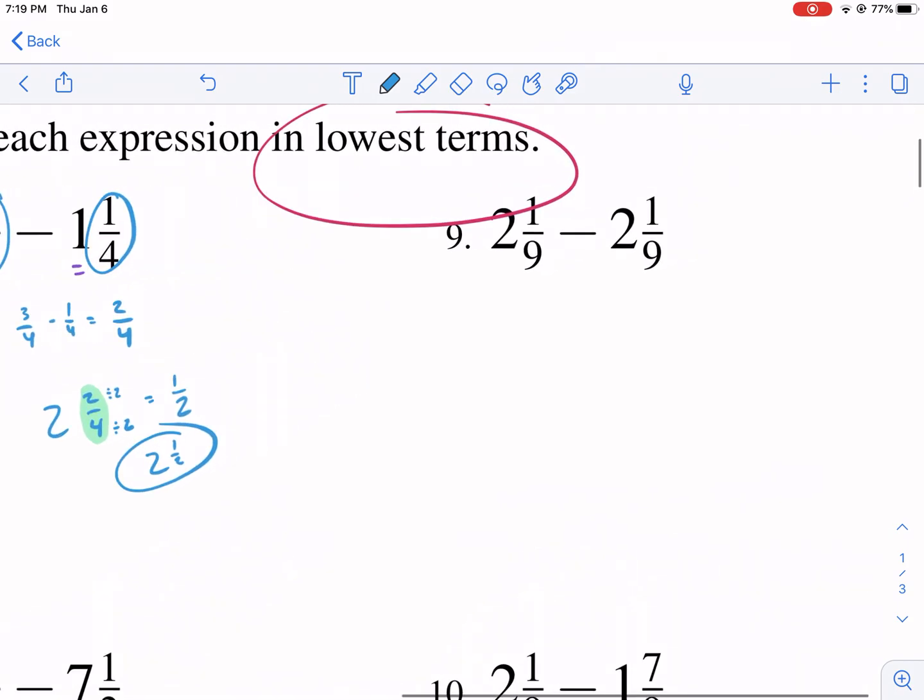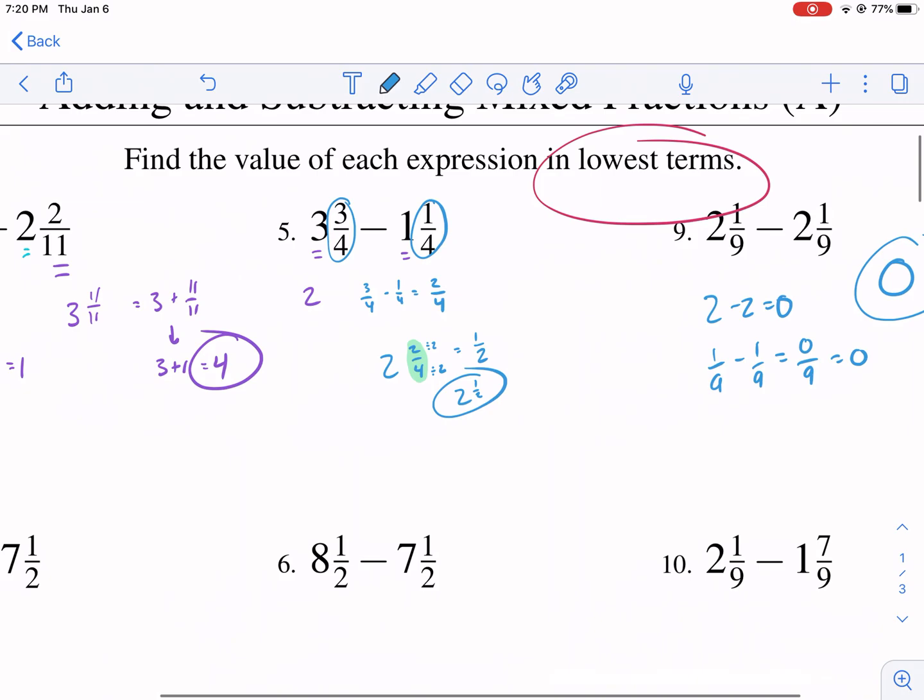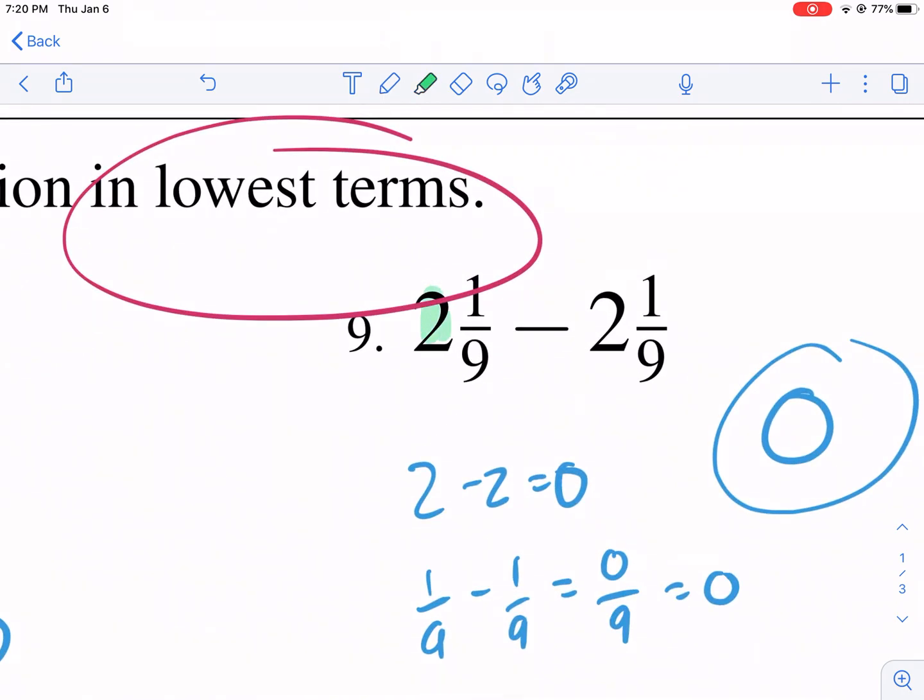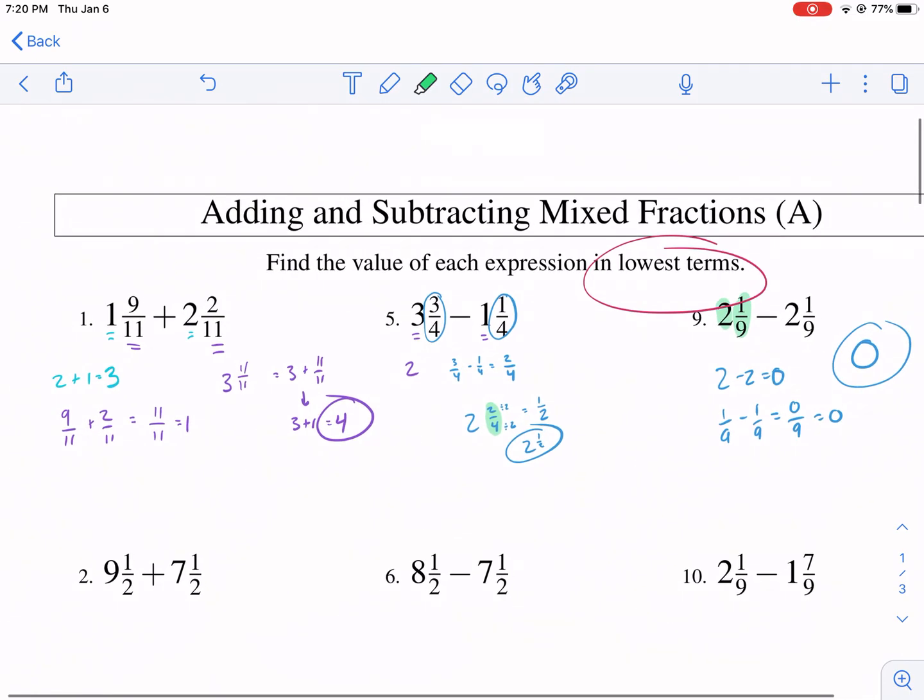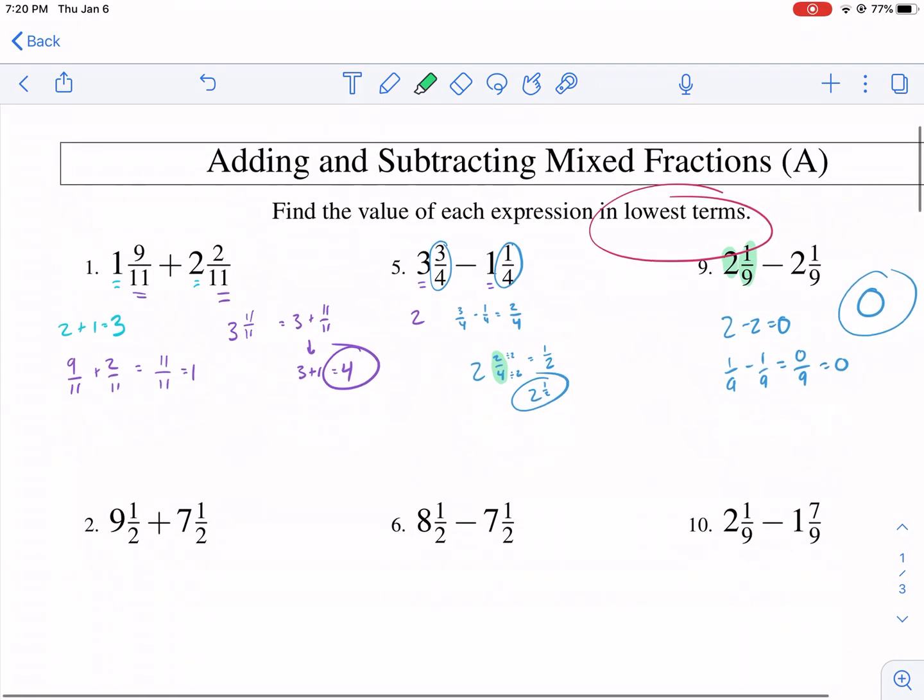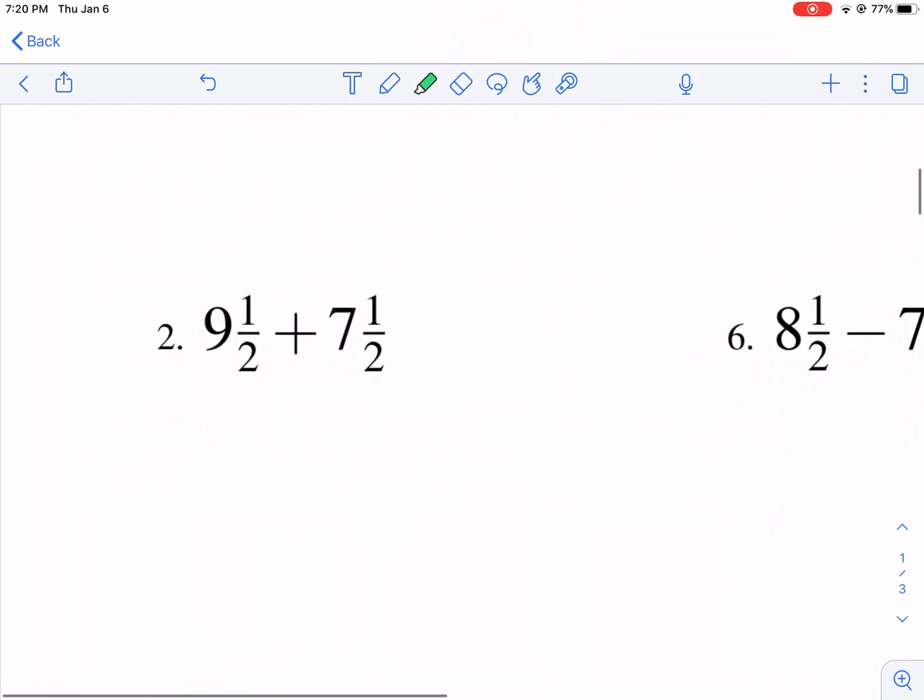Let's go over this one. If we have two and one ninth minus two and one ninth, we do two minus two, that gives us zero. So now it's left to the fraction to see if we have anything left over. One ninth minus one ninth is zero ninths or just zero. So our final answer is going to be zero. We have zero plus zero, and that is zero, because essentially what a mixed number is, is it's this whole number plus this fraction there.